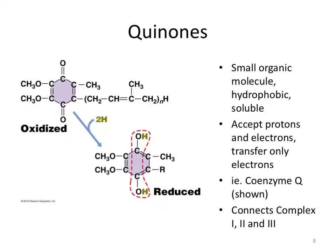Some of the most important non-protein components of electron transport chains are quinones — small, organic, hydrophobic molecules. Quinones are excellent electron-carrying molecules and are diffusible, providing mobility for electrons as they flow through the ETC. They are useful in connecting complexes, for example connecting Complexes 1 and 2, and 2 and 3. They can accept protons and electrons, but transfer only electrons. Coenzyme Q is the most common quinone in most microbial electron transport chains.